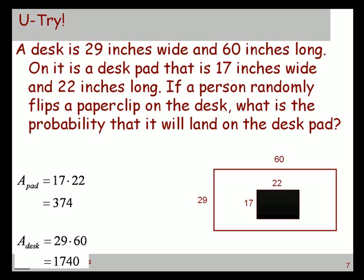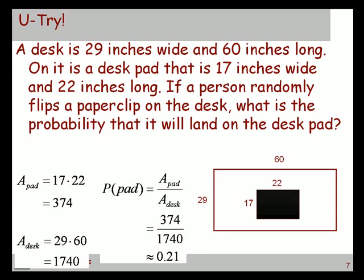And then we need to go ahead and find the probability that that paper clip is going to land on the pad. So once we've got those two numbers, how do we find the probability that it lands on the pad? Other way around. Yeah, because probability is always what we want to happen divided by what could happen. Right? We want it to land in the 374 square inches. It could land anywhere in the 1740 square inches. So probability is always what we want to happen divided by what could happen.